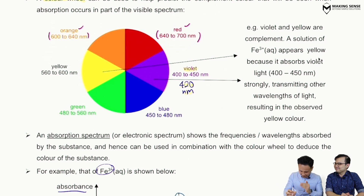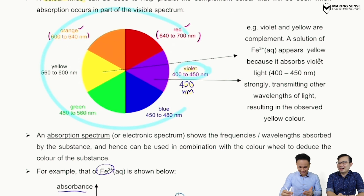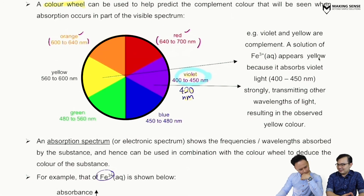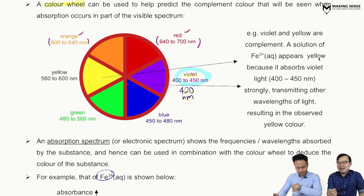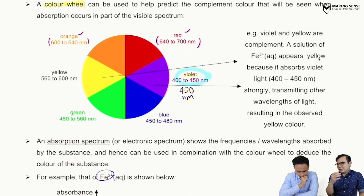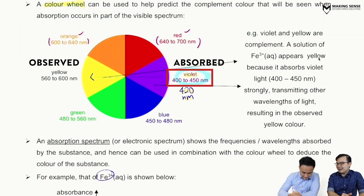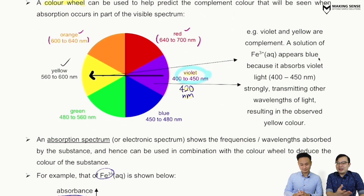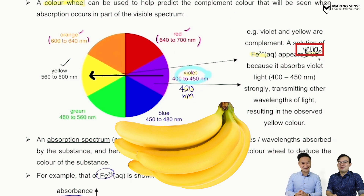So the shortcut is this: we use the color wheel, arranged like a rainbow in a clockwise or anti-clockwise manner divided into six parts. The color you observe will always be opposite to the color you absorb. Since Fe³⁺ absorbs violet, jumping to the opposite side of the wheel gives yellow — so the object appears yellow. There's actually a small error in the notes: Fe³⁺ should not be listed as blue; Fe³⁺ should appear yellow — like bananas. The right ones.